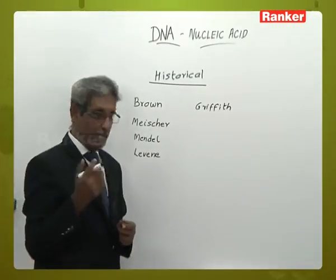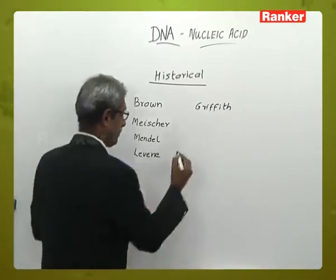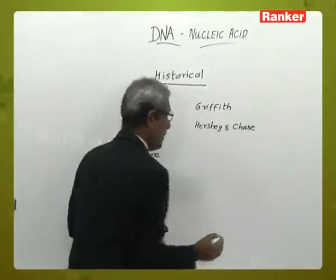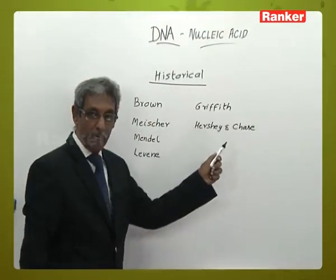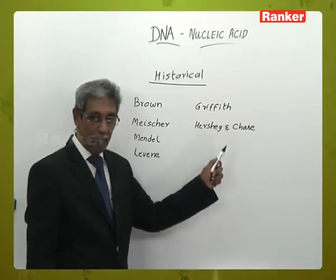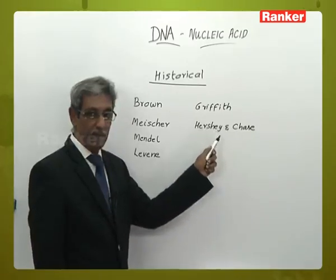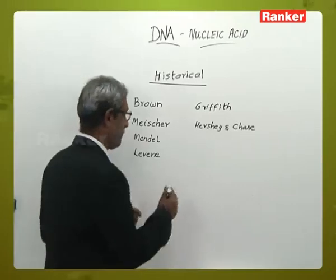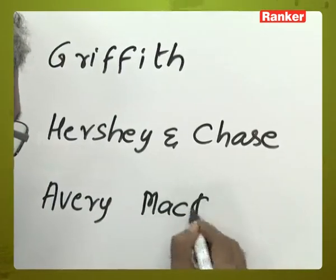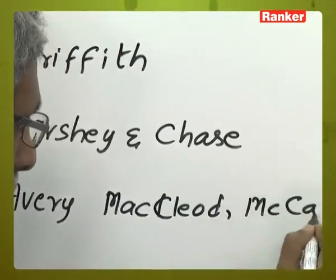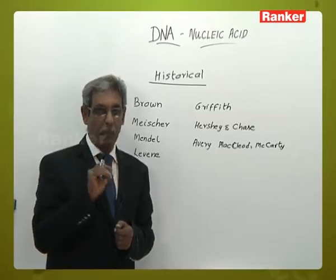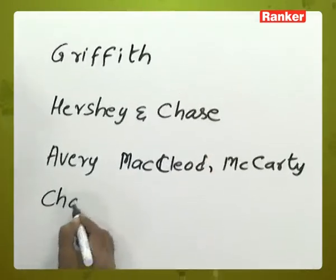Griffith first established evidence that DNA is the genetic material. Hershey and Chase determined the pattern of inheritance in a bacteriophage and found the role of DNA and proteins as the genetic material, providing evidence for the presence of genetic material in bacteriophages. Avery and colleagues again established that DNA is the infective principle and not the proteins.